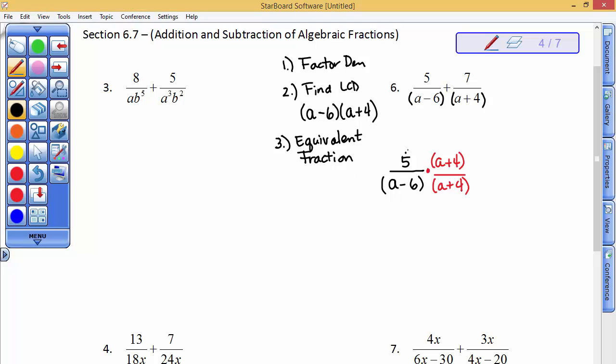It's a common error that people do. What you've got to do is you've got to take the 5 times a and get 5a, and the 5 times 4 and get 20. And sometimes, what I'll do is I'll just put that that numerator now has the least common denominator in it.